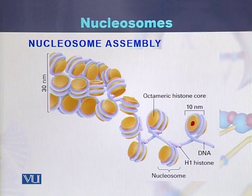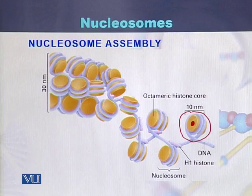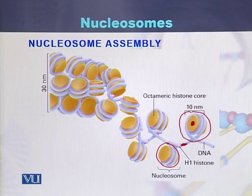DNA is wrapped around the 8 molecules of histone, and this structure is called a nucleosome. The DNA which is present between 2 nucleosomes is called linker DNA.